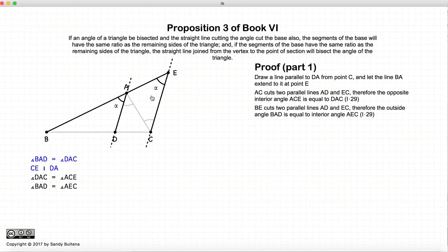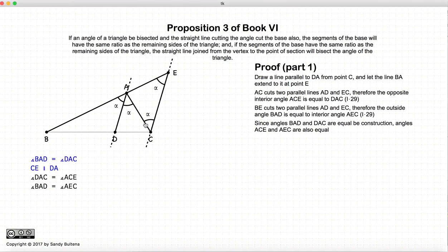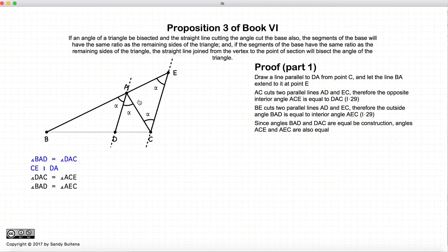Likewise, if we have a line passing through two parallel lines, the interior and the exterior angles will be equal, so BAD will be equal to AEC. Now remember, BAD is equal to DAC. So BAD equals DAC, and BAD is equal to AEC. So AEC is equal to ACE.